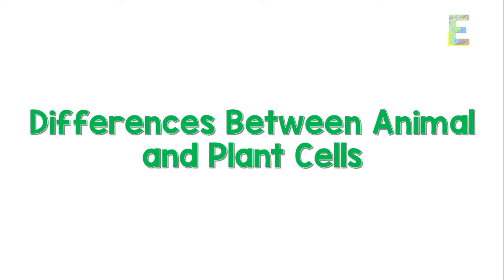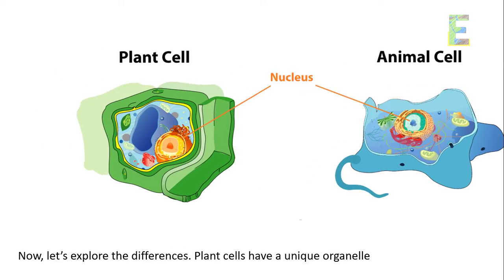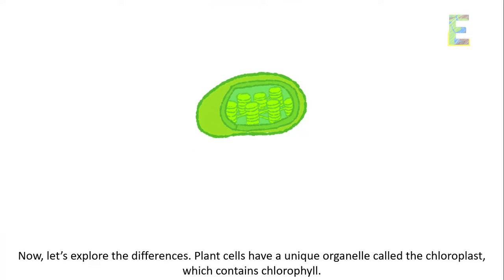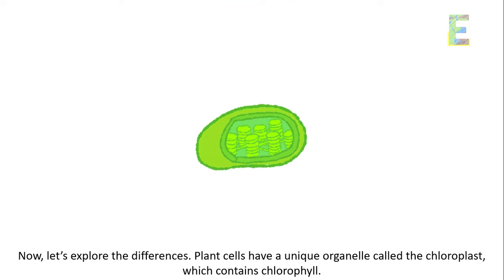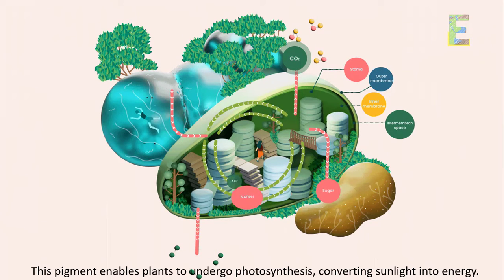Differences between animal and plant cells. Now, let's explore the differences. Plant cells have a unique organelle called the chloroplast, which contains chlorophyll. This pigment enables plants to undergo photosynthesis, converting sunlight into energy.